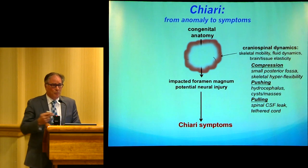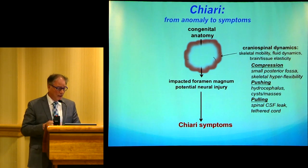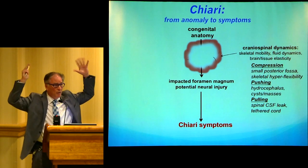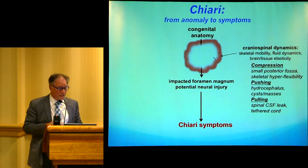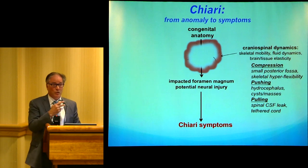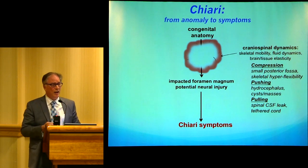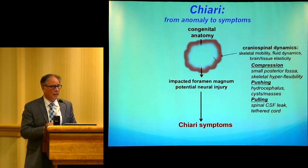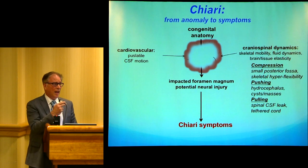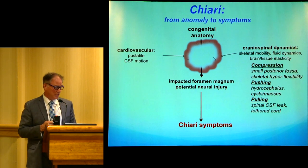Is the Chiari caused by compression, such as a small posterior fossa? Is it caused by bending and twisting? Are things being pushed down by fluid pressure above — hydrocephalus, a cyst, or masses? Is it being pulled down by a fluid leak and low pressures, or tethered cord? These are all different forces and different kinds of effects which can all lead to crowding of the cervical medullary junction. I'll also talk about cardiovascular pulsatile CSF motion as a possible contributor.